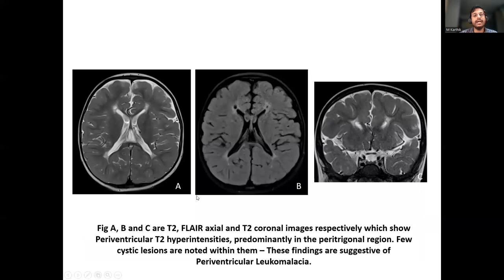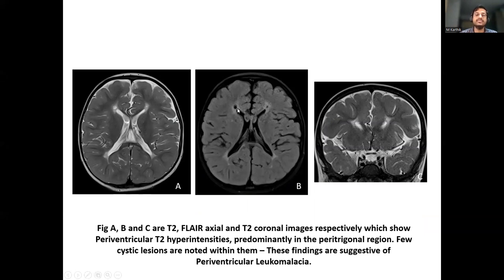Figures A, B, and C show T2 axial, FLAIR axial, and T2 coronal images with periventricular T2 hyperintensities predominantly in the peritrigonal regions, with a few cystic lesions also noted within them. These findings are suggestive of periventricular leukomalacia.